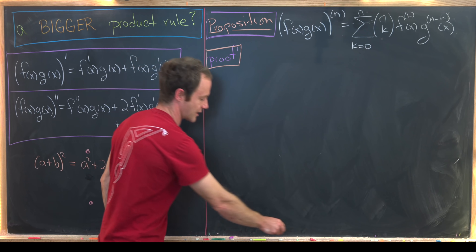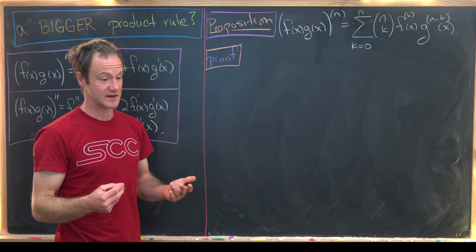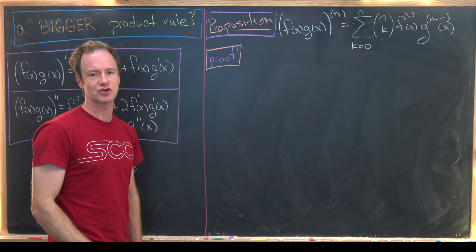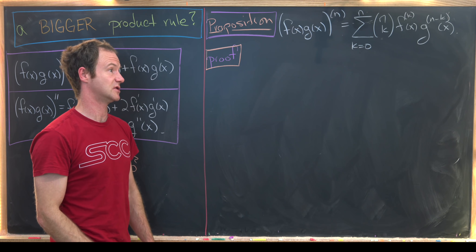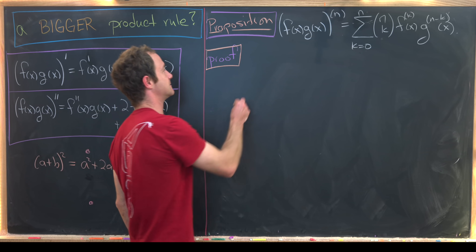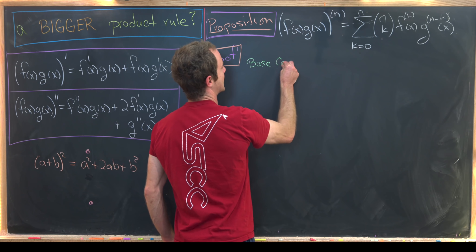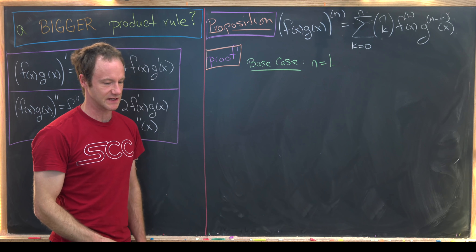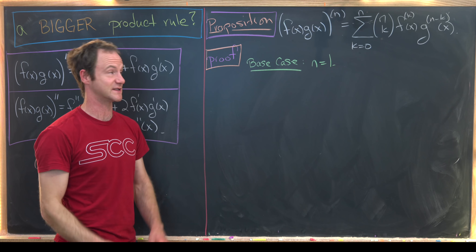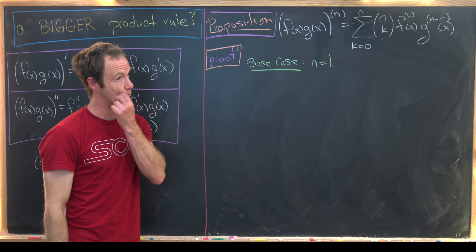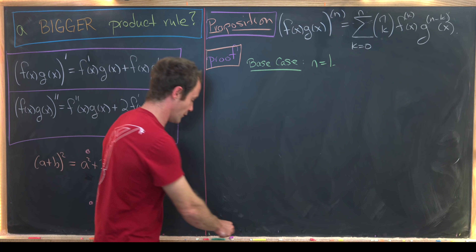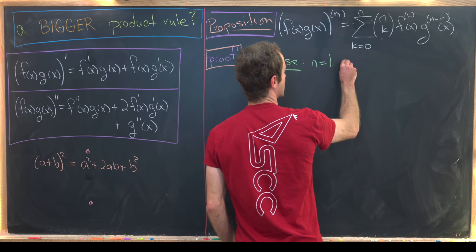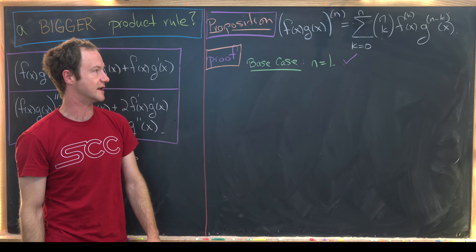This is a good exercise to prove with induction, though there might be a trick to prove it without induction — if you know one, post it in the comments. So we need to start with a base case. The base case should be n = 1, since that's most illustrative. And n = 1 is clearly just the normal product rule, which we're assuming to be true already.